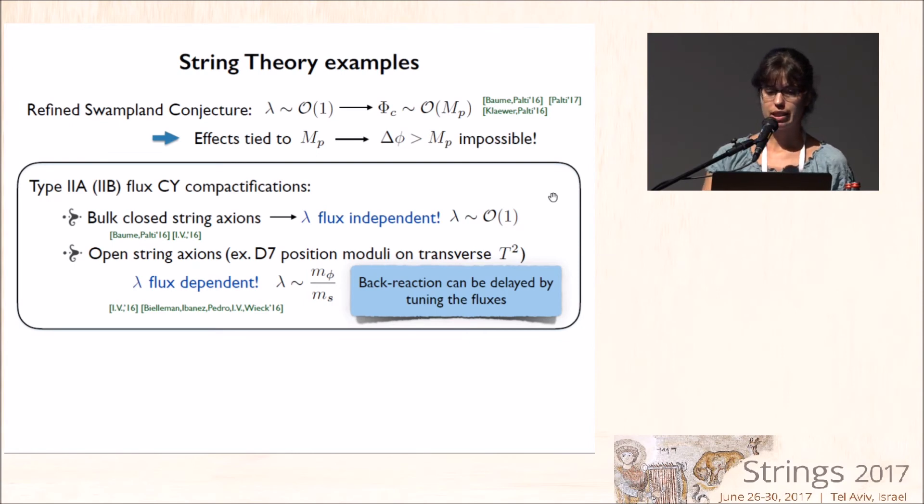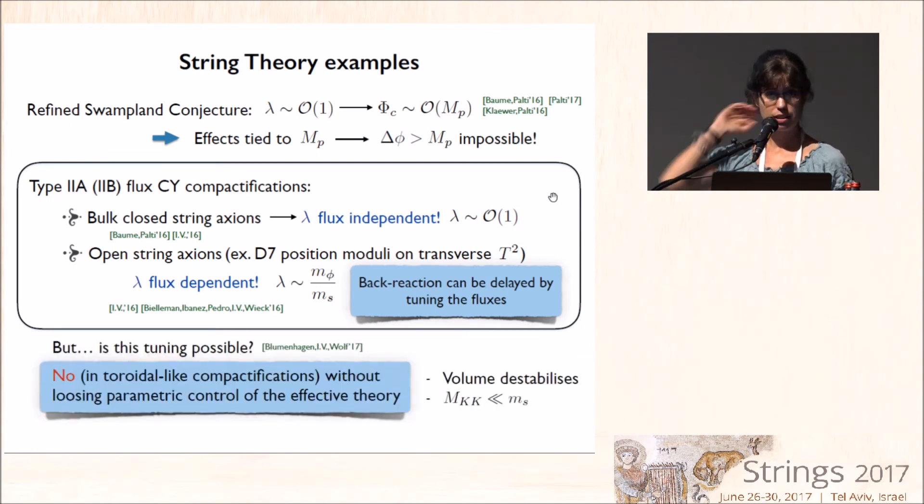Now, the problem that we also saw that in the concrete models that we could explicitly check, that we could stabilize all the moduli, this tuning was not possible. So in models based on orientifold toroidal compactifications, we could not achieve this tuning without losing parametric control of the effective theory. And well, Florian Wolf will present a poster about this.